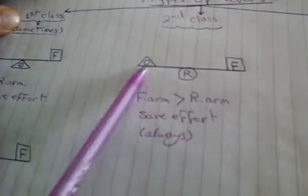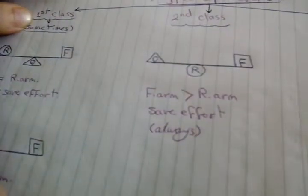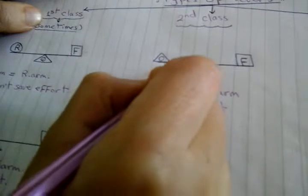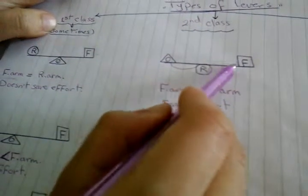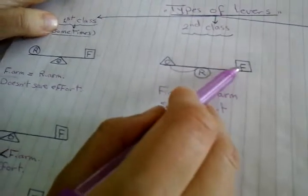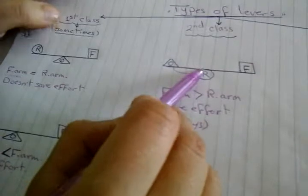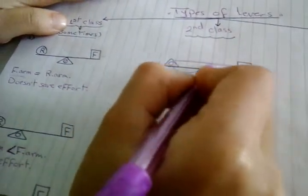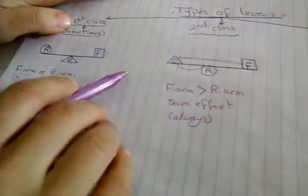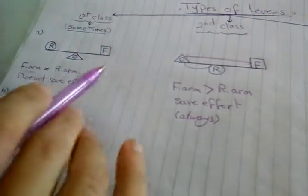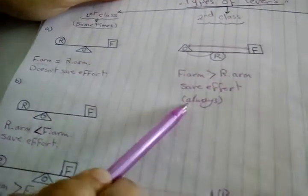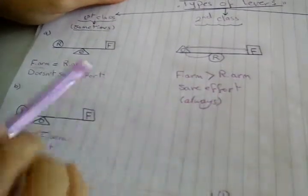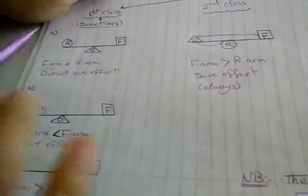In the second class lever, resistance is between effort force and fulcrum. The resistance arm is always shorter — the full distance from effort force to fulcrum is always the longer arm. So force arm is always longer than resistance arm, meaning the second class lever always saves effort. It has only one case — simple and easy.